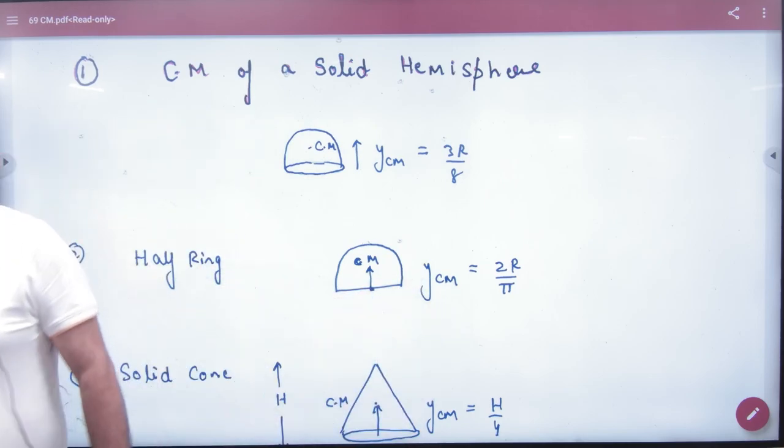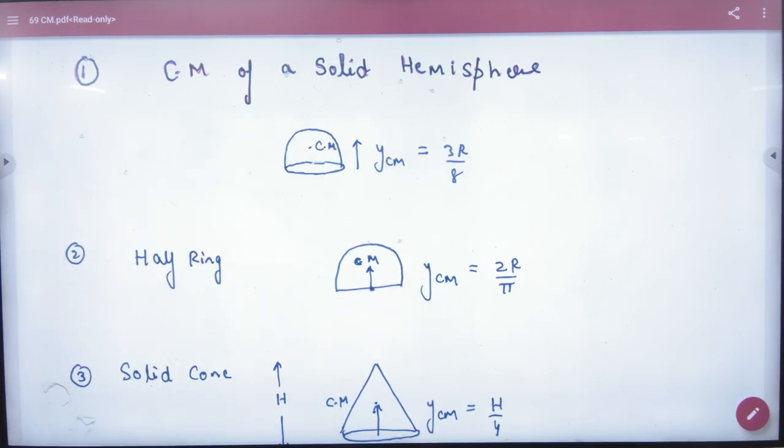So let's write another. So first, let's write solid hemisphere - solid, volume-wise distribution. Then let's write half ring, the second one is half ring, the other formula. The second formula.